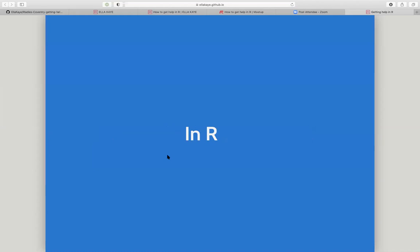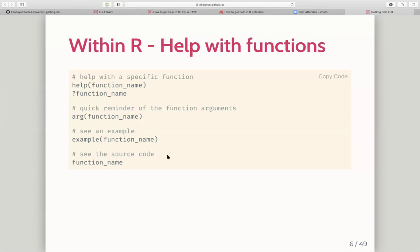The obvious place to start is within R itself. If your problem is that you're not sure how a function works, you can use the help() function or the question mark with the function name to pull up the help viewer. There are shortcut arguments too — if your question is about what arguments a function takes, you can use args(). You can see examples of how functions work using the example() function, and to look at source code, type the function name with no brackets.